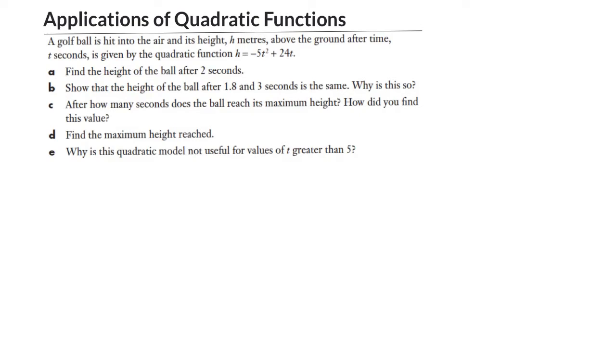So we've got a golf ball, it's hit into the air and its height is given by minus 5t squared plus 24t, where t is in seconds. We've got a quadratic here because we've got a highest power of 2 and we've got a quadratic that's going to be concave down because you've got a negative coefficient of t squared.